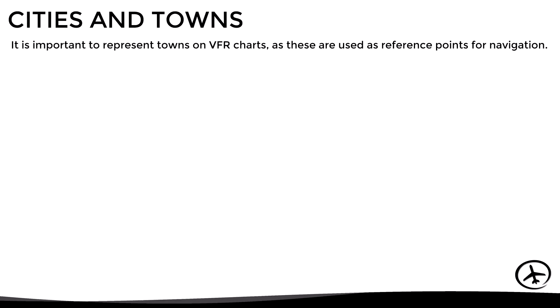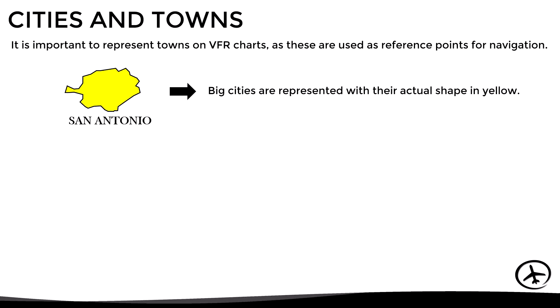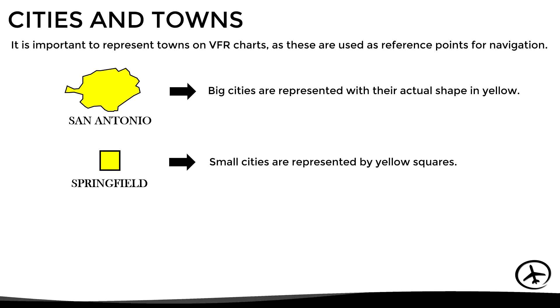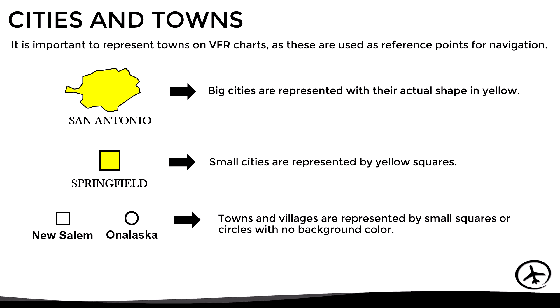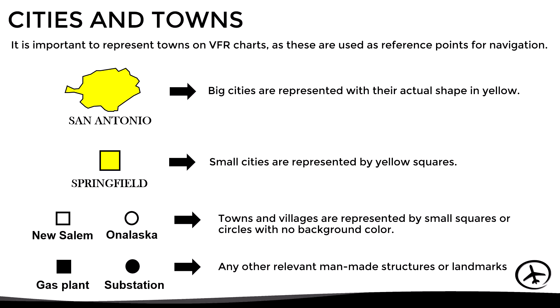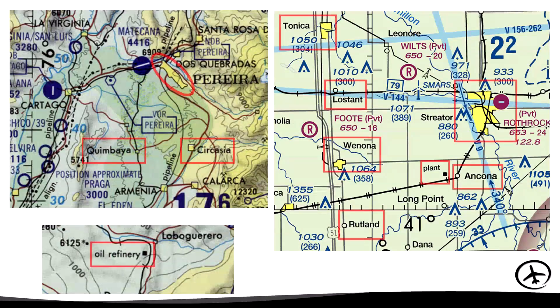Cities, towns, and villages are also included on the chart since they are commonly used as visual reference for navigation. Big cities are represented with their actual shape in yellow, smaller cities by yellow squares, towns and villages by small squares or circles with no background color, and any other relevant man-made structures or landmarks are represented by black dots or squares.